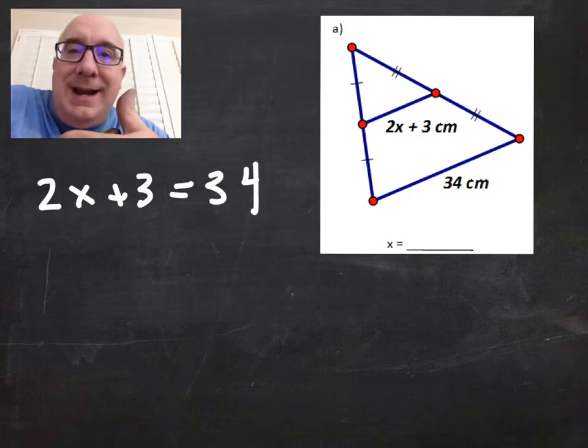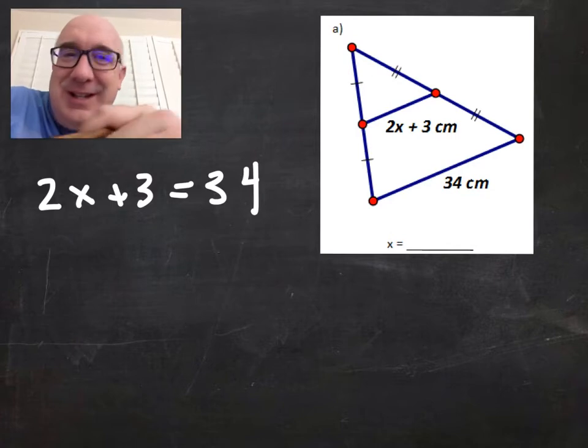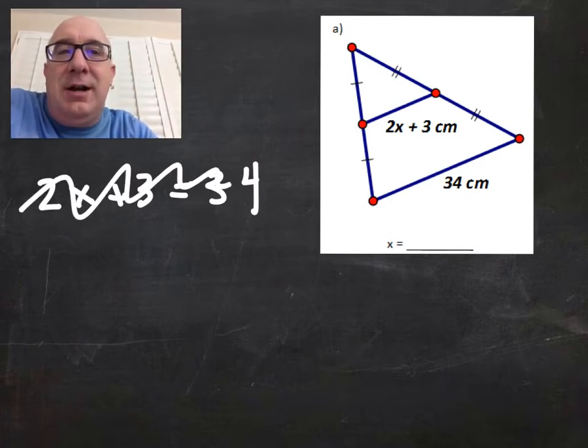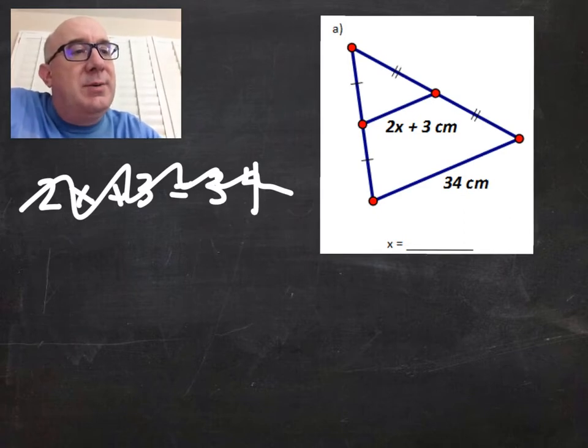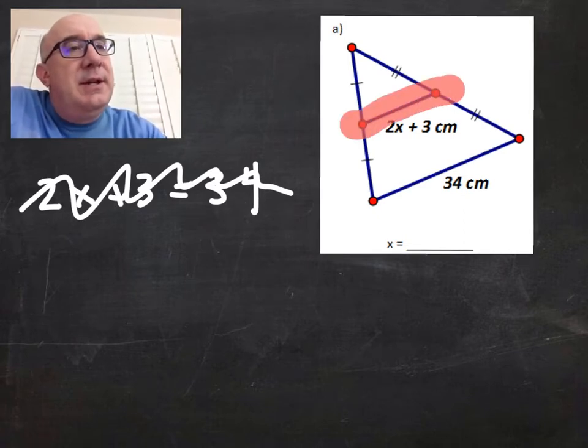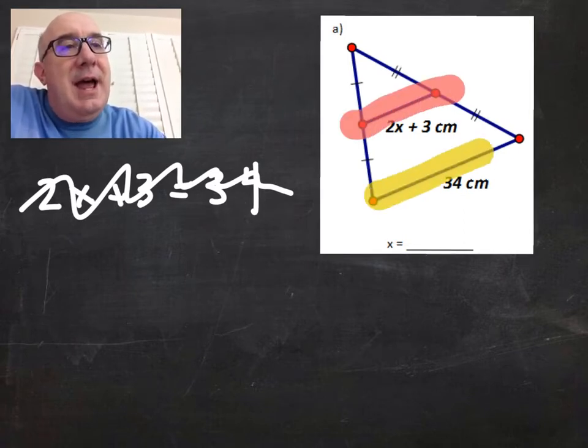They're trying to create a statement of equality, but those things are not equal to each other. The relationship, as we know it, is that this is exactly half of this length.